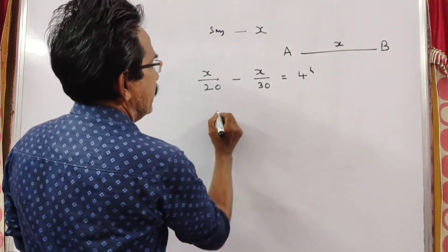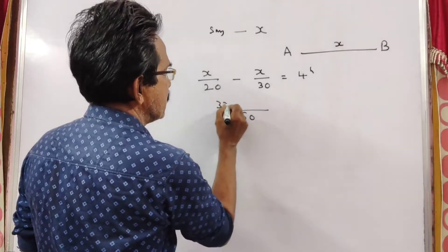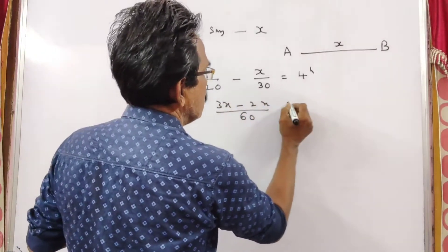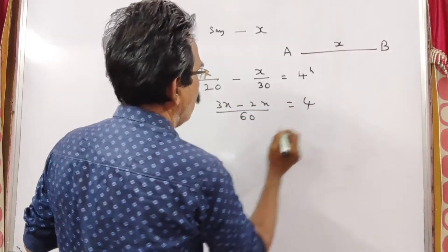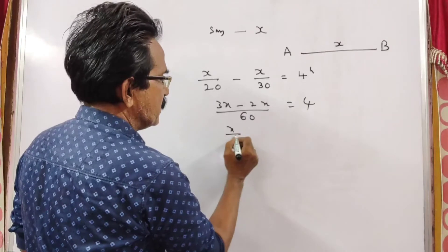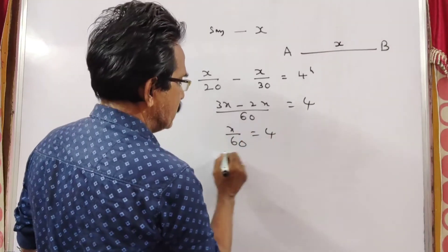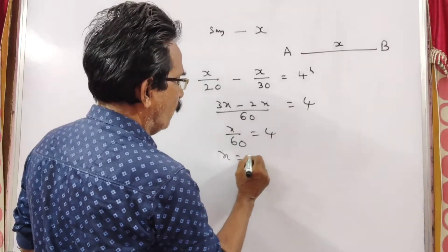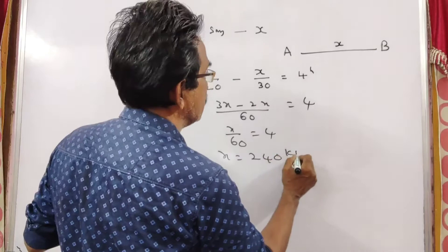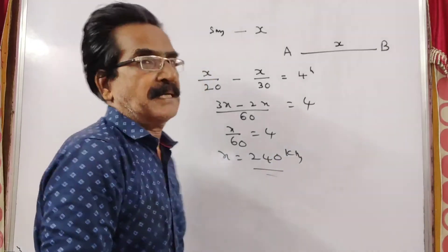So X by 20 minus X by 30 equals 4. Solving: X by 60 equals 4, so X equals 240 km. The distance from A to B is 240 km.